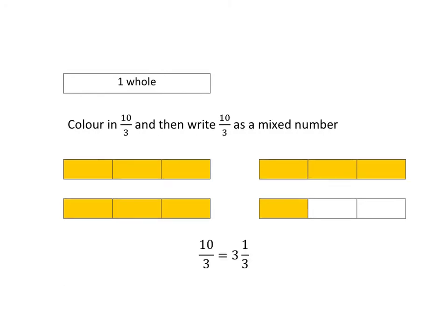Let's just make sure that we could do it without the picture at all. To turn 10 thirds into a mixed number, we would take 3 and divide it into 10. 3 goes into 10, well, 3 times 3 is 9, so it goes in 3 times with just 1 left over. So 3 goes into 10, 3 times, with 1 third left over.